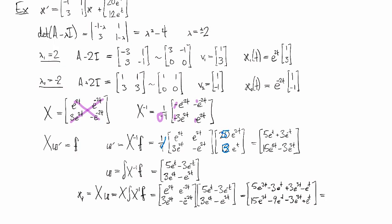We get 8e to the 3t's in total and minus 4e to the t's, and then we have 12e to the 3t's minus 8e to the t's.